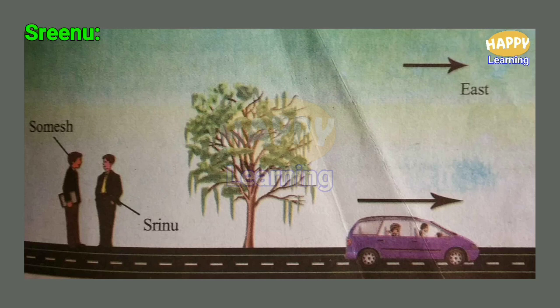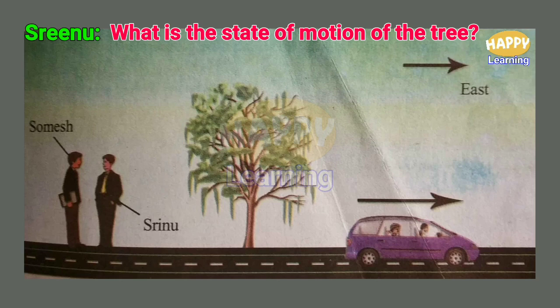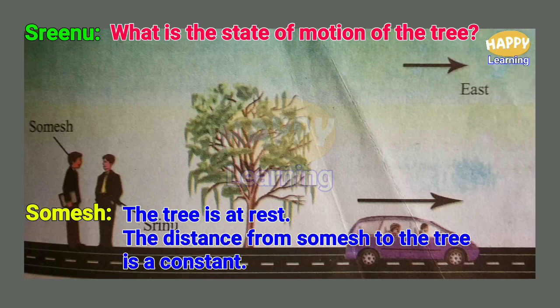Srinu asks Somesh: what is the state of motion of the tree? Somesh answers that the tree is at rest. How can he answer that? The distance from Somesh to the tree is constant and is not changing even as time passes. Therefore, he says the tree is at rest — the tree is at rest with respect to Somesh, and his answer is absolutely correct.